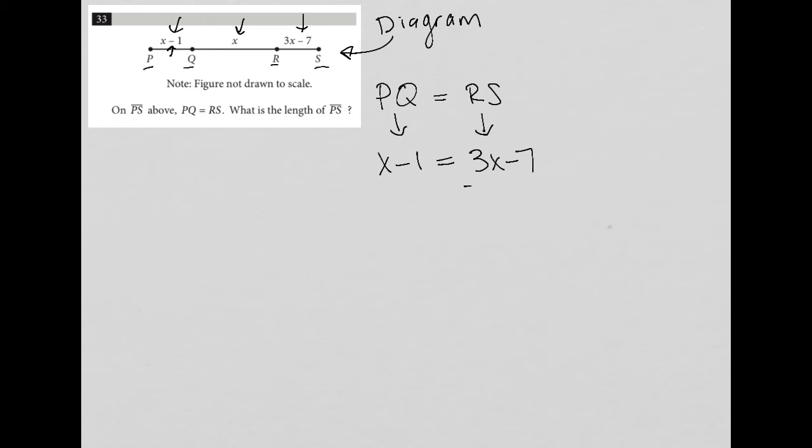So I am going to subtract 3X from both sides just so that I have X's on the left-hand side. You could have definitely consolidated your X's on the right-hand side. But X minus 3X is negative 2X. I still bring down this minus 1 equals, this is now gone, and equals negative 7.